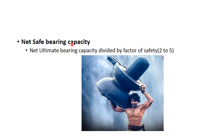To summarize: net safe bearing capacity is the net ultimate bearing capacity divided by the factor of safety. The three types are: ultimate bearing capacity (maximum value, gross pressure intensity considered), net ultimate bearing capacity (gross ultimate bearing capacity minus overburden pressure), and net safe bearing capacity (net ultimate bearing capacity divided by factor of safety).